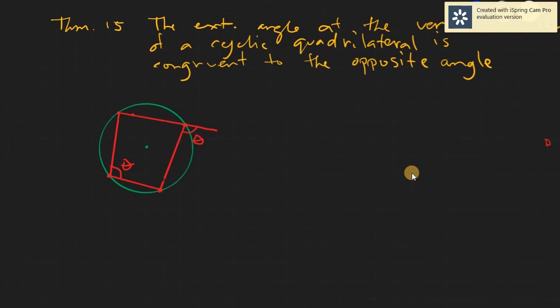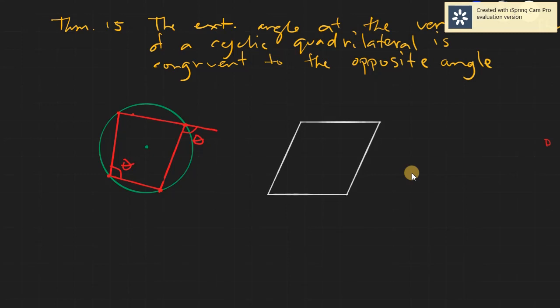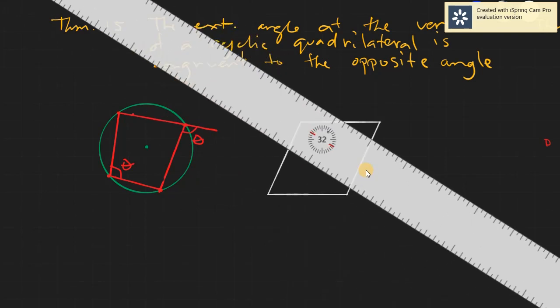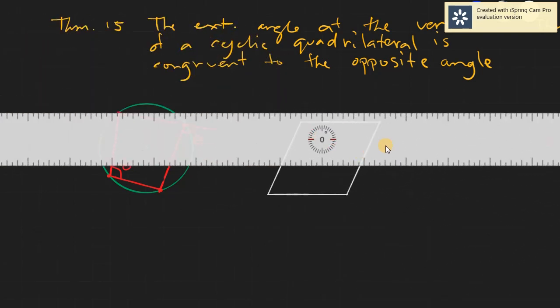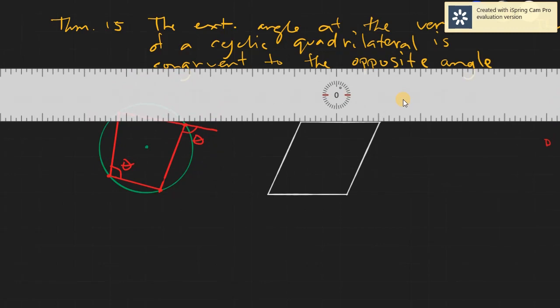So what do we mean by this? First, let's discuss how we create an external angle. Say we have this given figure — this given rhombus. External angles are angles that are formed by extending one side of our given figure. Say we have this given figure and we extend this side, and if we extend this side, you will create an angle with the other two sides.